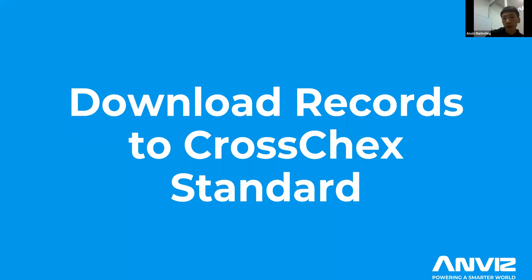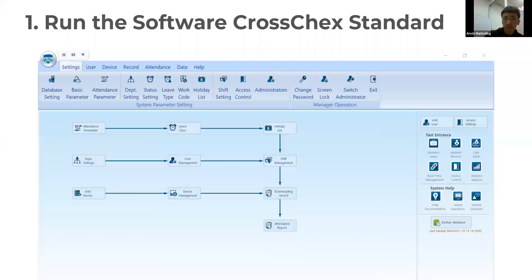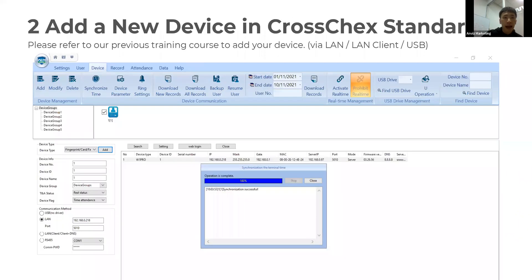Let's go to the first topic: downloading records to CrossCheck Extended. First, you need to run the software CrossCheck Extended, and then you need to go to the Add Device menu. You can refer to our previous training course if you need to know how to add a device.